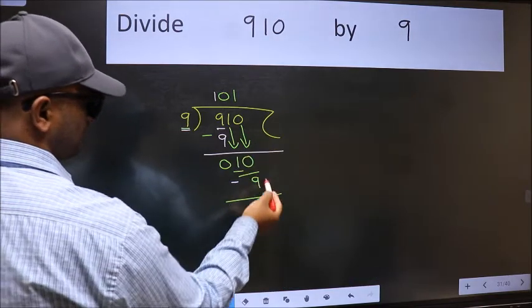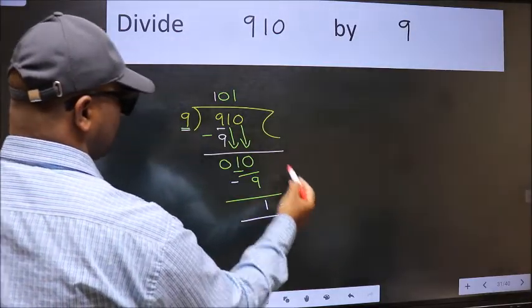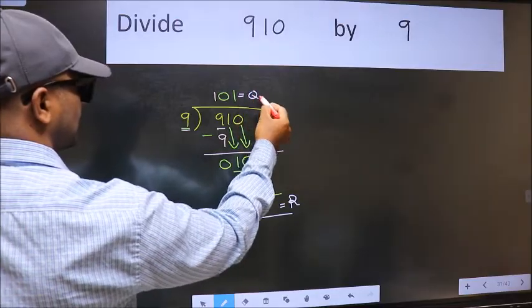No more numbers to bring it down. So we stop here. This is our remainder and this is our quotient. So we're done. Thank you.